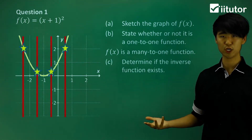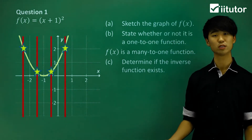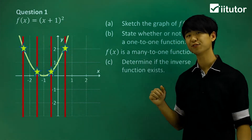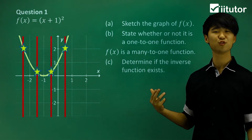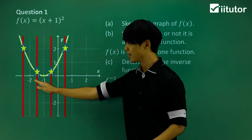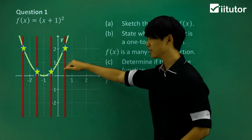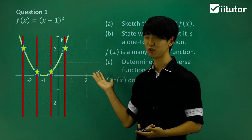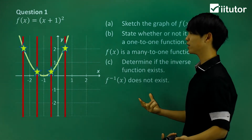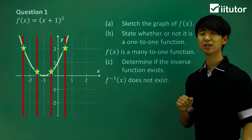In part c, it's asking whether the inverse function exists. We know that if the function were one-to-one, the inverse function would exist. However, we don't have one-to-one — we have many-to-one. Many-to-one functions don't have an inverse function. If I try to reflect this over the y = x line to draw its inverse, the vertical line test won't work and the result won't be a function. So the inverse function does not exist.